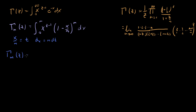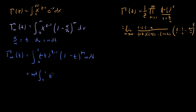If we make that substitution, our bounds of integration go from x = 0 to m, becoming 0 to 1 — good for the beta function. We have x to the z minus 1 becoming (mt) to the z minus 1, and then (1 minus t) to the m times m dt. Pulling out m to the z, we get m to the z times the integral from 0 to 1 of t to the z minus 1 times (1 minus t) to the m dt. This is exactly the beta function — specifically beta(m+1, z).